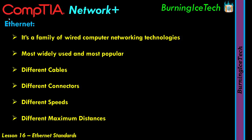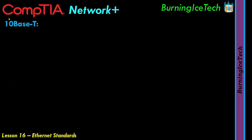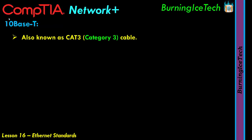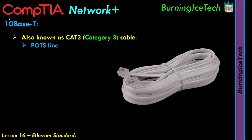Let's start with the first Ethernet standard. First up, we have 10BaseT. This is a very old Ethernet standard with many other names. It's also commonly known as CAT3 cable — CAT being short for category, so category 3 cable. Believe it or not, this is basically your old-fashioned telephone cable. The telephone lines you plug into your phone are CAT3 cable. Some folks also know these as POTS lines — P-O-T-S — short for plain old telephone system.